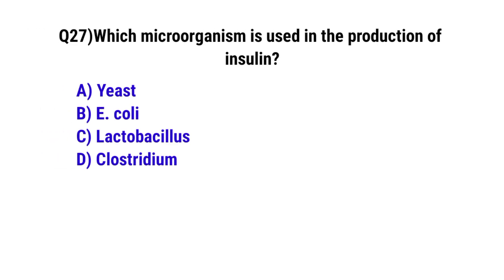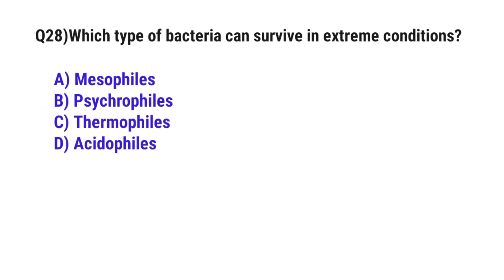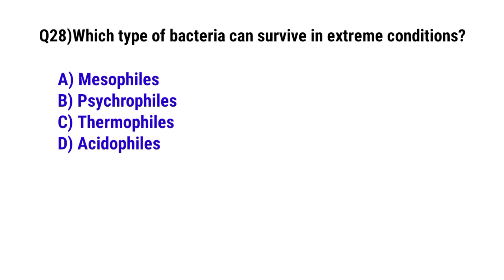Question number 27. Which microorganism is used in the production of insulin? The correct option is E. coli.